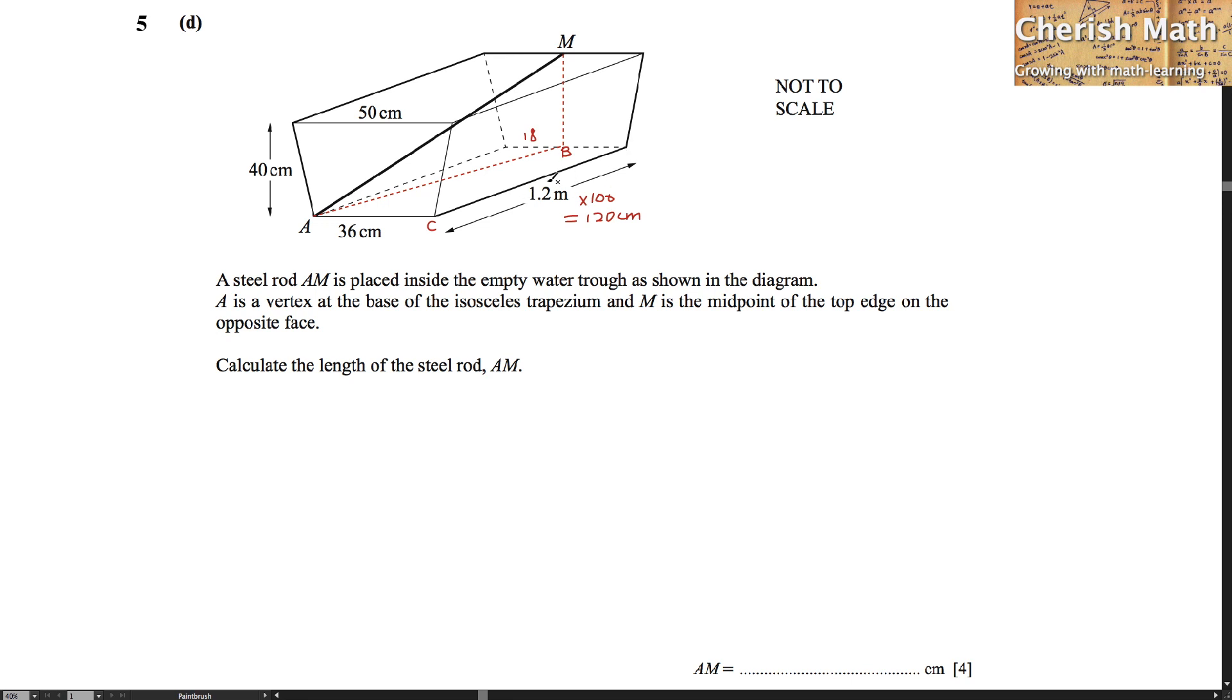We can use this length to find what is the value of AB by using the Pythagorean theorem. So, AB is in fact, we are using the square root for the value of 120, which is from A until the end here, squared plus 18 squared. So, the value of AB that we got here is actually 121.3425.